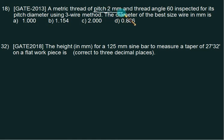Take this numerical from GATE 2013: A metric thread of pitch 2 mm and thread angle 60° is inspected for pitch diameter using three-wire method. It's straightforward. Calculate best diameter D = P/2 × sec(α/2). In this case, pitch equals 2, so we have 2/2 × sec(60/2), which is 1/cos(30). The value is 1.154 mm, choice B is correct.